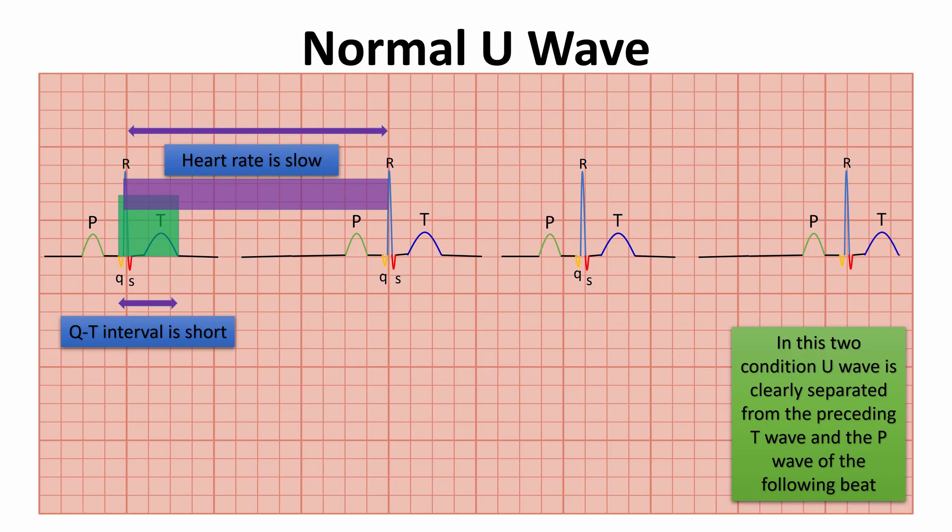The normal U wave is upright and is normally much smaller than the T wave which it follows.